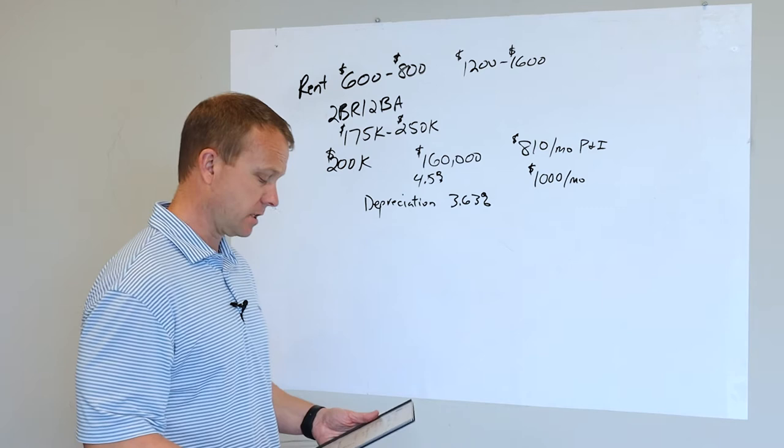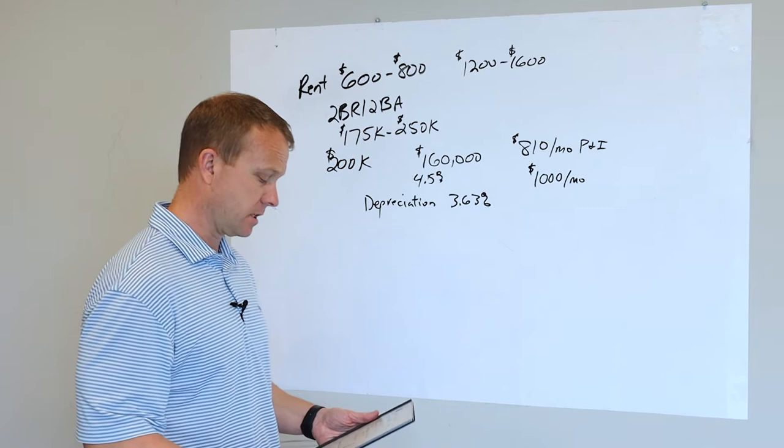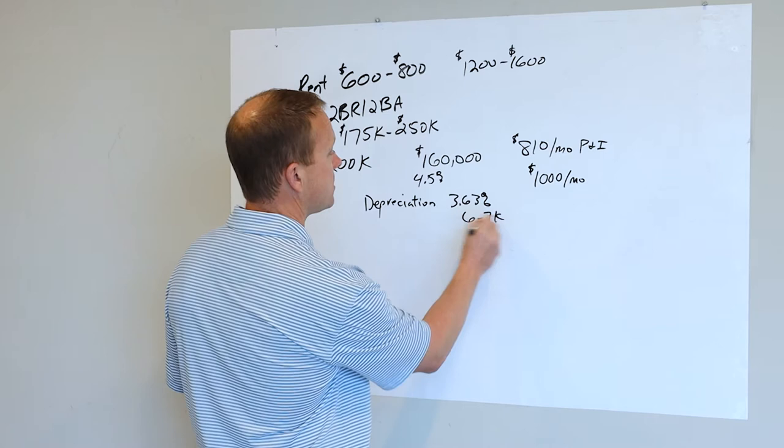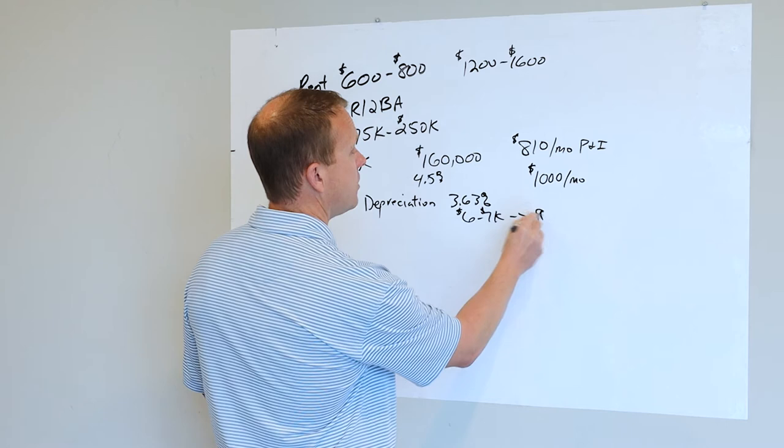It may be $180,000, maybe $170,000, $160,000, something like that. But as that depreciates, you're going to be somewhere in the $6,000 to $7,000 range in depreciation. So this is going to come off your taxes.